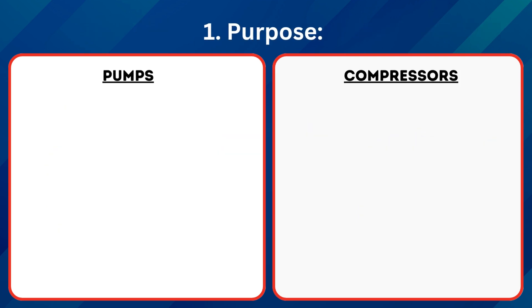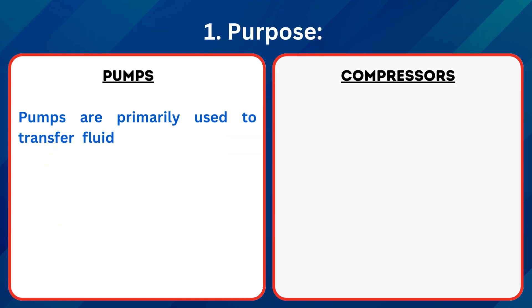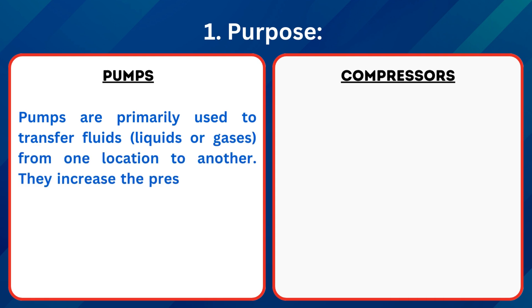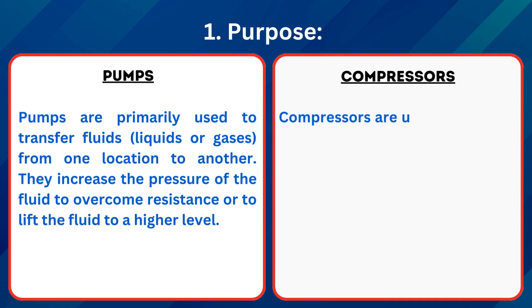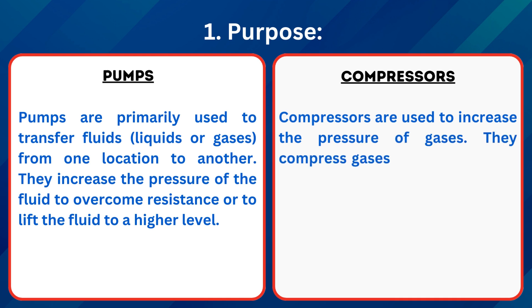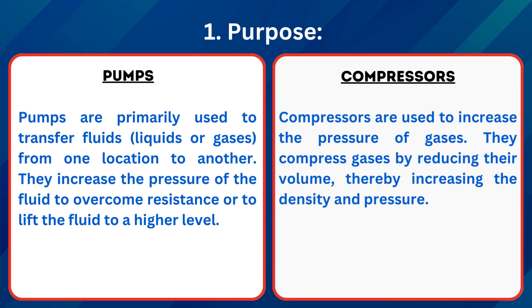1. Purpose: Pumps are primarily used to transfer fluids — liquids or gases — from one location to another. They increase the pressure of the fluid to overcome resistance or to lift the fluid to a higher level. Compressors are used to increase the pressure of gases. They compress gases by reducing their volume, thereby increasing the density and pressure.